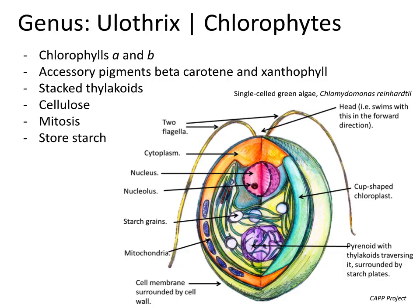Chlorophytes and all green plants have some key features that include chlorophylls A and B, the accessory pigments beta-carotene and xanthophyll, they have stacked thylakoids, their cell walls are usually composed of cellulose, their cells conduct mitosis without centrioles as would be found in an animal, and they also produce and store starch through the process of photosynthesis. On the right-hand side, you can see an illustration of a model green algal cell, which in this case is the unicellular Chlamydomonas.